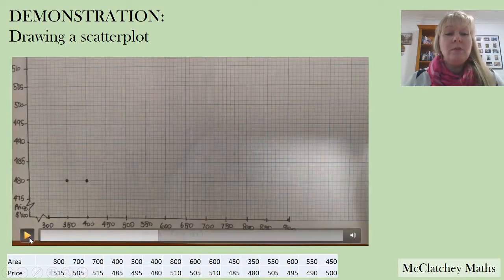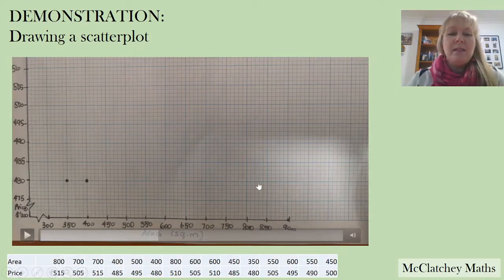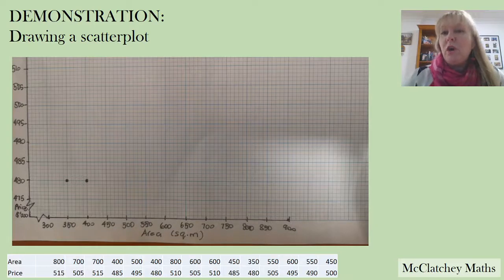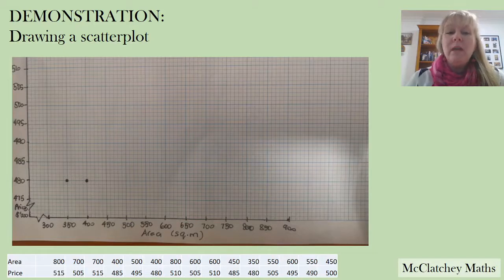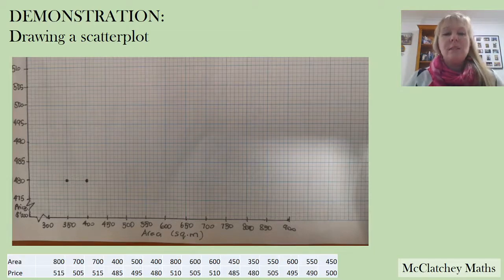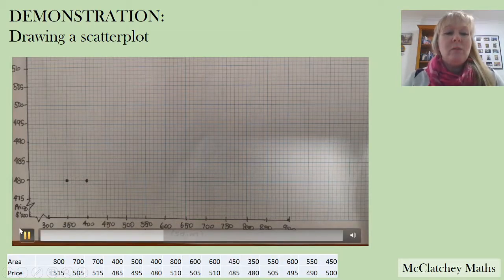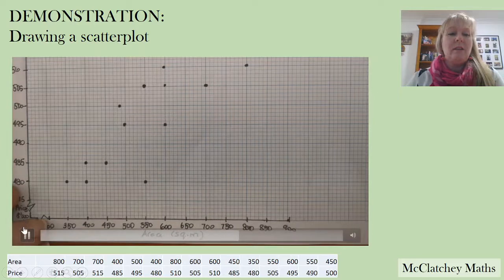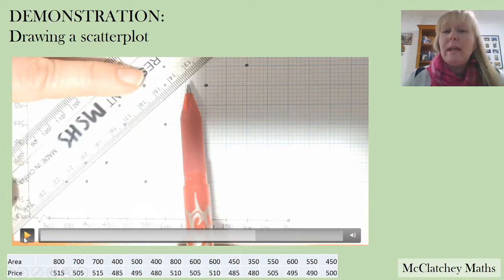Notice I've put in titles on the bottom axis and on the y-axis. I also put a title on the graph but unfortunately it didn't get captured by the camera. Always make sure you've got a title and axis labels, and always include units of measurement on those axis labels — not just the word 'area' but indicating square meters and thousands of dollars. Now we're drawing our dots in — take your time and make sure you're doing it accurately.